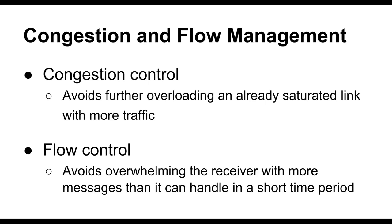It's a bit like drivers slowing down in heavy traffic instead of flooring it and running into the cars in front of them. Flow control, on the other hand, avoids overwhelming the receiver with more messages than it can handle in a short time period. Some receivers on devices are quite small — memory-limited embedded devices — and sending too much data at once can cause them to lock up or start discarding messages. Flow control mitigates this problem.